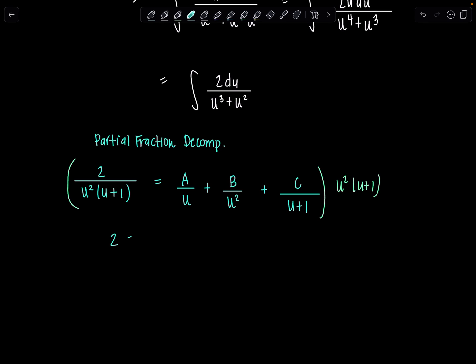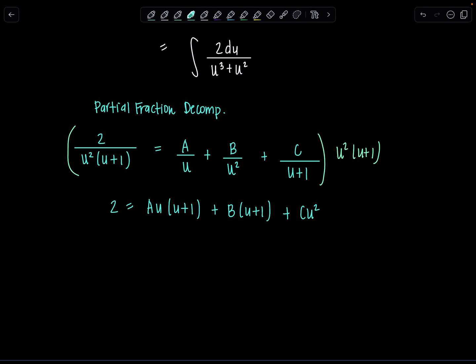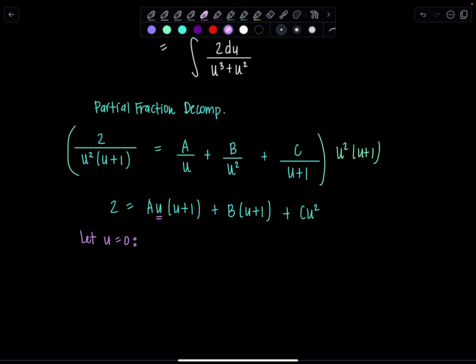This gives us 2 equals A times u times (u plus 1), plus B times (u plus 1), plus C times u squared. You have a couple of ways you can solve this — you could multiply everything out and equate coefficients, but what I like to do is substitute in values of u that zero out many of the factors. For the first one, I'll let u equal 0, and I'm left with 2 equals B times 1, so B is equal to 2.